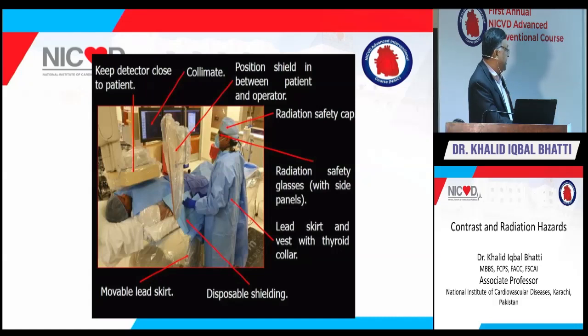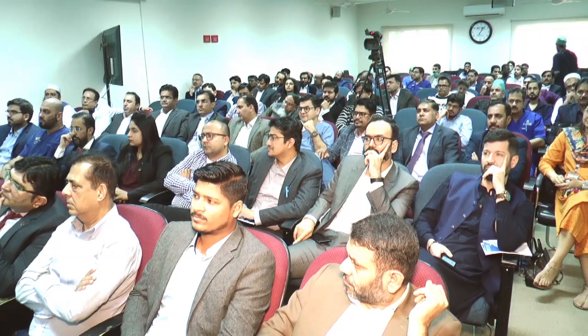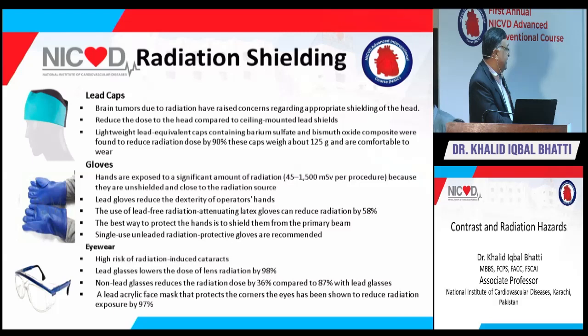In the ideal cath lab, keep the detector close to the patient and position a shield between the patient and the apparatus. Radiation safety includes wearing lead glasses with side panels. Lead caps weigh about 125 grams and reduce radiation dose to the brain by 90%. Lead gloves protect the hands. Lead eyewear reduces radiation by 98%, compared to only 36% for non-lead glasses, making lead eyewear strongly preferable.